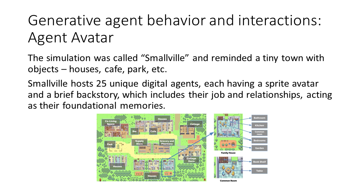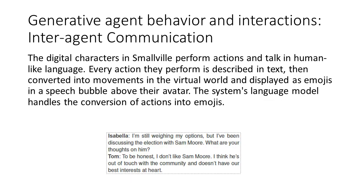The simulation was called Smallville, and resembled a tiny town with objects — houses, cafe, park, etc. Smallville hosts 25 unique digital agents, each having a sprite avatar and a brief backstory, which includes their job and relationships, acting as their foundational memories. The digital characters in Smallville perform actions and talk in human-like language.